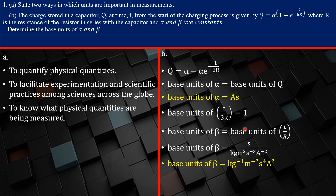Simplifying the base unit of beta: kilogram goes to the denominator giving per kilogram, meter squared goes to the denominator giving per meter squared, s⁻³ inverts to s³, multiplied by s gives s⁴, and per ampere squared inverts to ampere squared. So the base units of beta are s⁴·kg⁻¹·m⁻²·A².